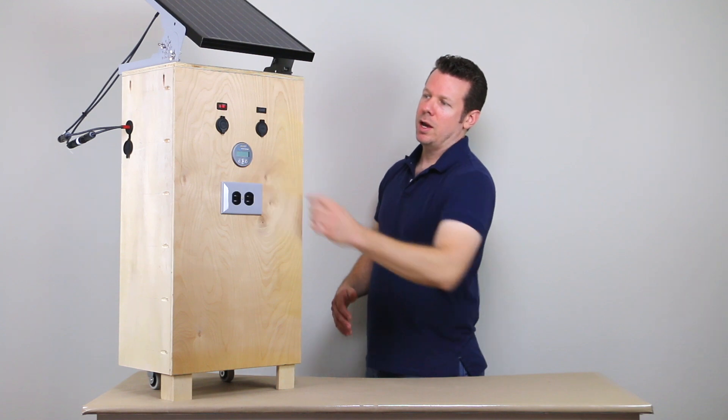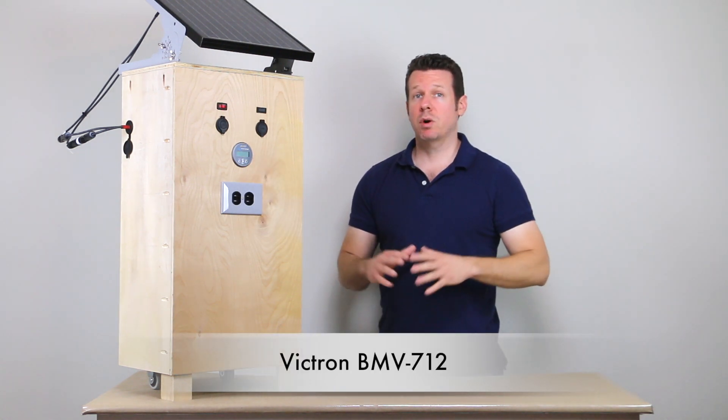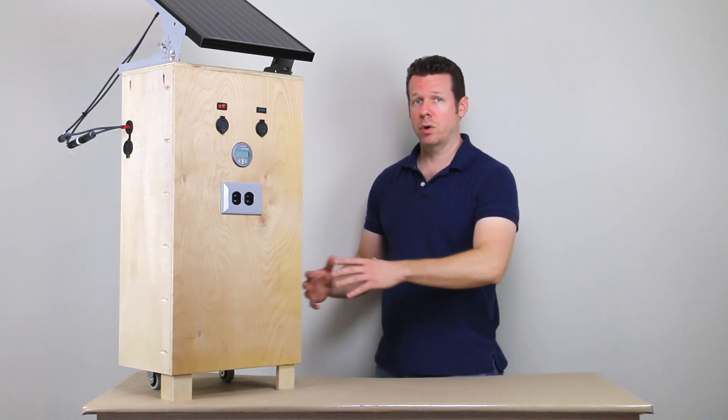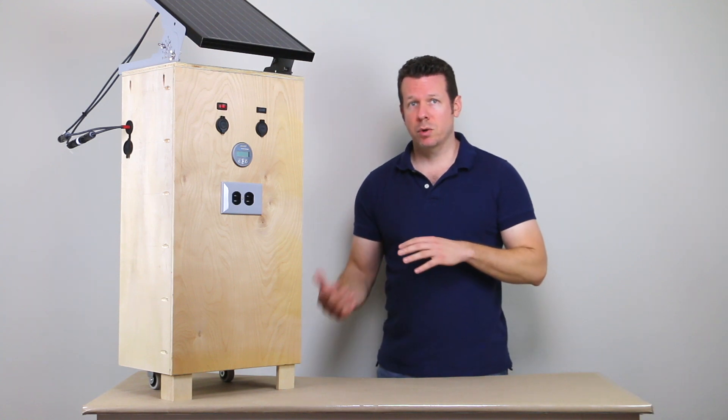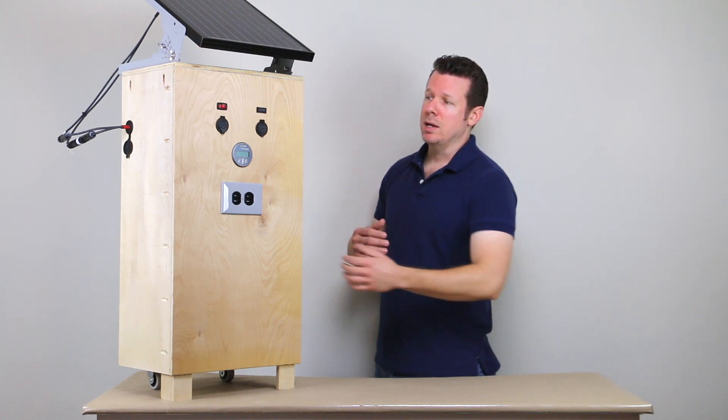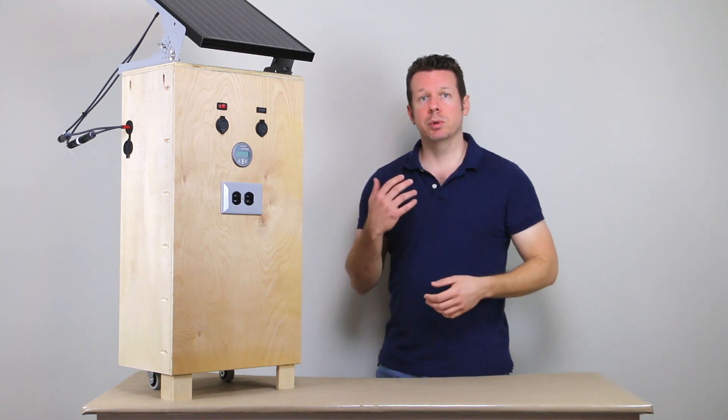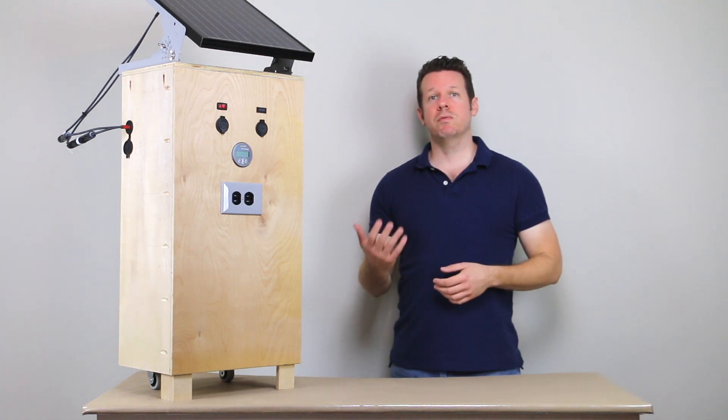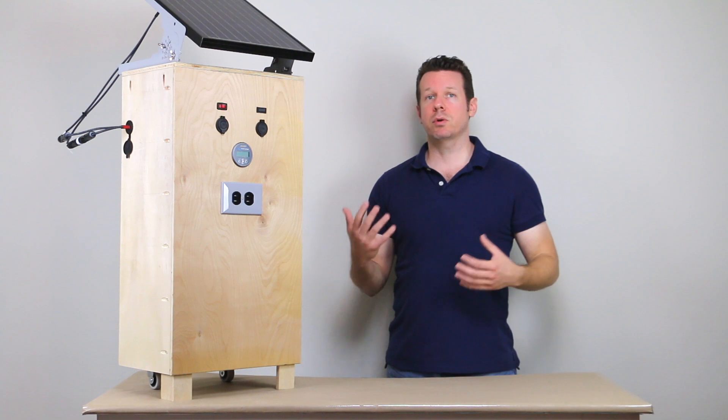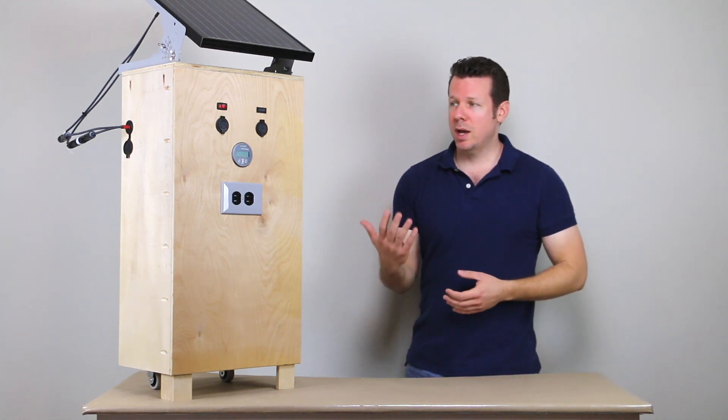And we have a Victron BMV 712 battery monitor. It's going to tell us what's going on with our battery, how much power is going in or out of that battery. And we can take a reading here at the unit, or we're also going to get a Bluetooth signal we can pick up with the Victron Connect app on our smartphone or tablet, and read that data there.